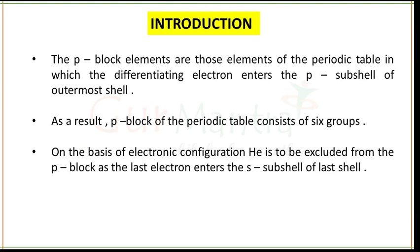Talking about a general overview of p-block: p-block elements are those elements of the periodic table in which the differentiating electron, or the last electron, enters the p subshell of the outermost shell. Since the maximum capacity of any atomic orbital is two electrons with opposite spins according to Pauli's principle, the maximum number of electrons in any p subshell is six. As a result, the p block consists of six groups: 13th, 14th, 15th, 16th, 17th, and 18th — also known as zero group with inert gases.